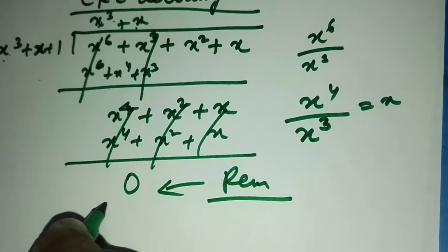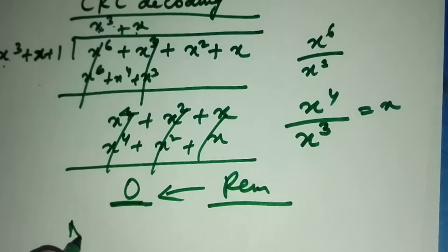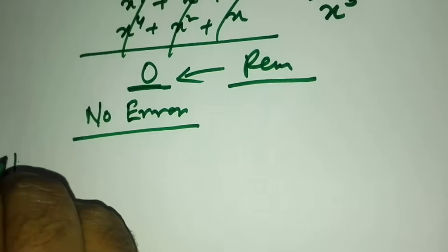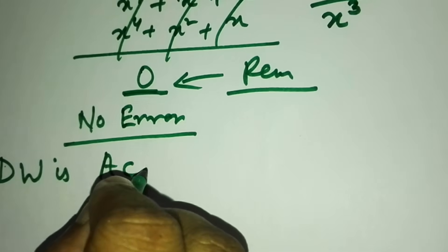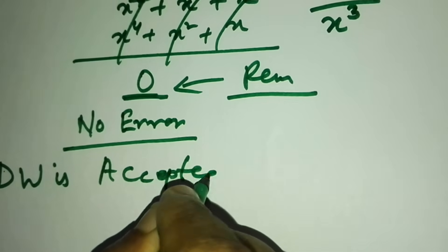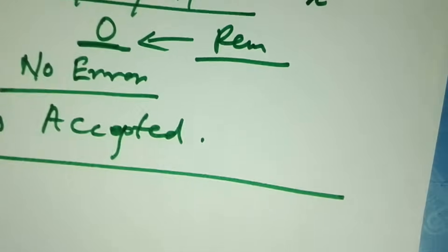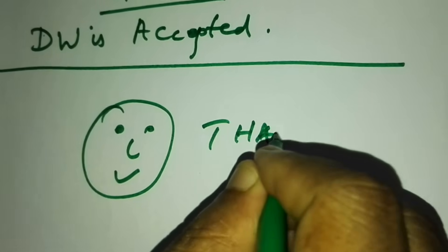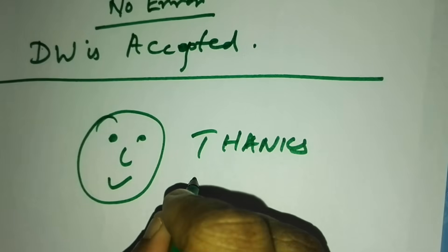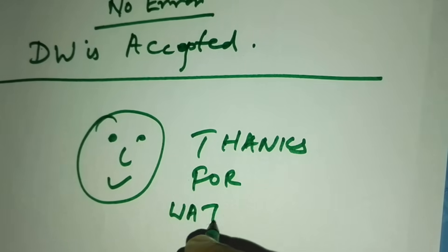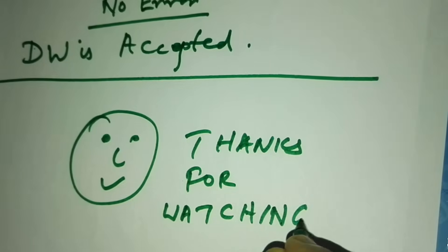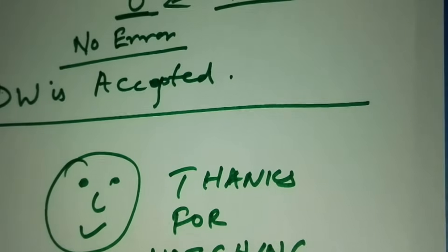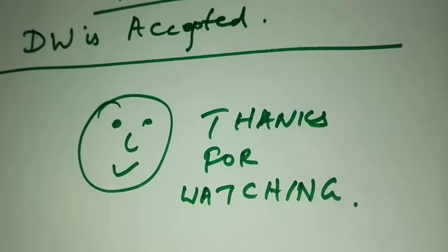A remainder of 0 indicates that there is no error, and the data word is accepted. Thank you guys, thanks for watching. Keep watching JacAdemy and please like, share, and comment. Thank you.